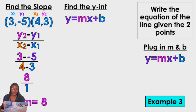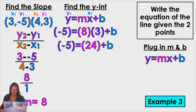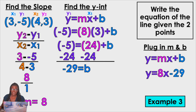We've got to find our Y-intercept — remember, your Y-intercept is B. We need to plug in Y1 and X1. Y1 is negative 5, X1 is 3, and M was 8. Multiply 8 times 3 which is 24. Get rid of that 24 by subtracting — to cancel a positive you do a negative. I get negative 29 equals B. Now that I have M and B: Y equals 8X minus 29.